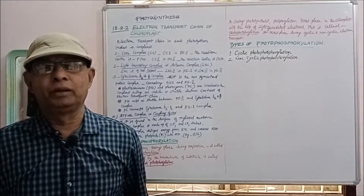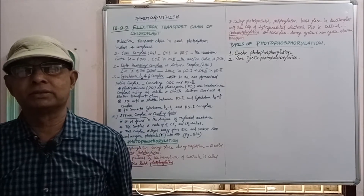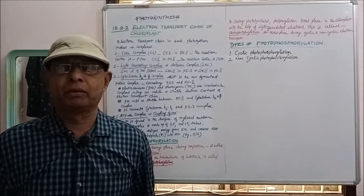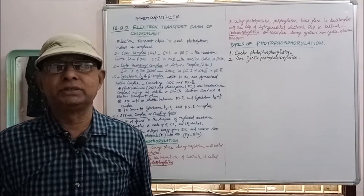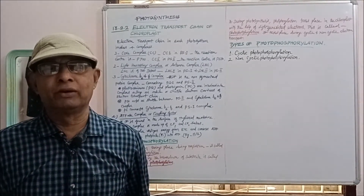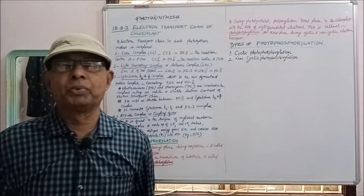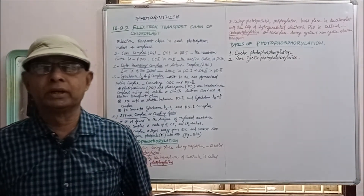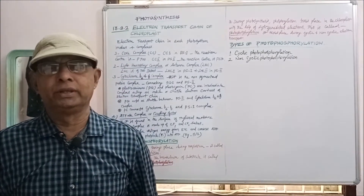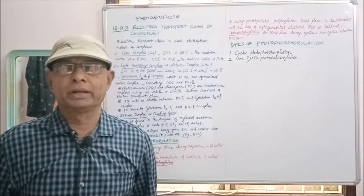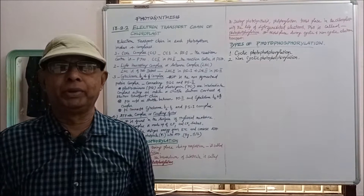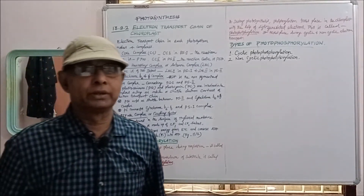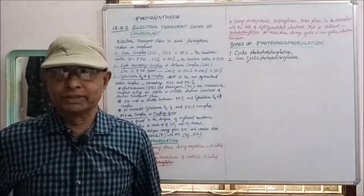The fourth one is the ATPase complex or coupling factors. It is found on the surface of the thylakoid membrane. This complex is made up of CF1 and CF0 factors — coupling factor 1 and coupling factor 0. This complex utilizes energy from the electron transport chain and converts ADP and inorganic phosphate (Pi) into ATP, the energy-rich compound or assimilatory power.